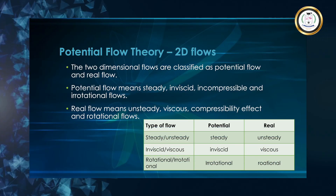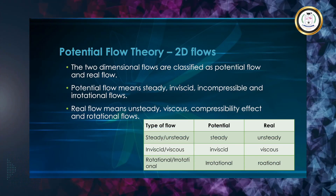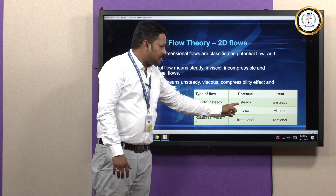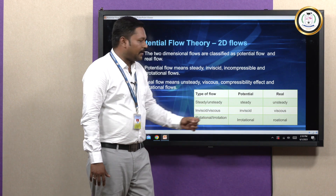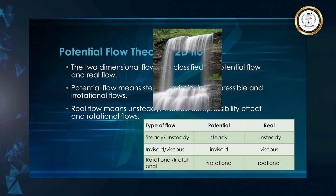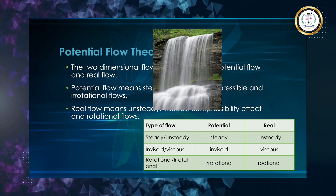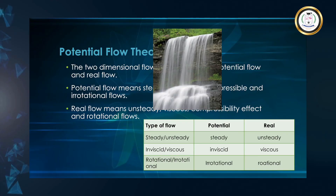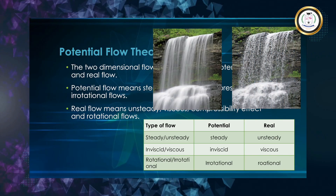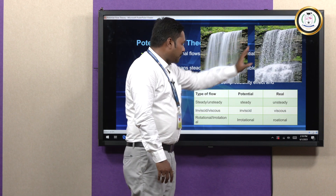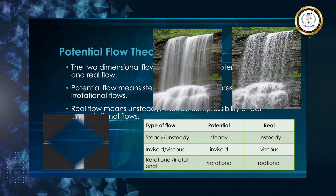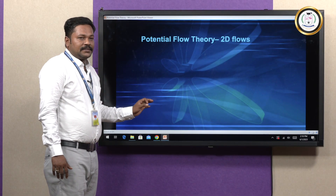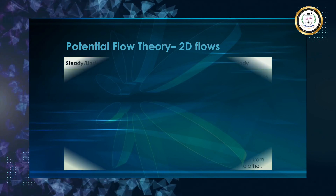The major things focused here are: steady versus unsteady, inviscid versus viscous, and rotational versus irrotational. Potential flow is steady, inviscid, and irrotational. Real flow is unsteady, viscous, and rotational. We have an example image captured as potential flow, and an image captured instantaneously as real flow. About the flat plate, whenever we have flow through a flat plate, we have flow dynamics as well.